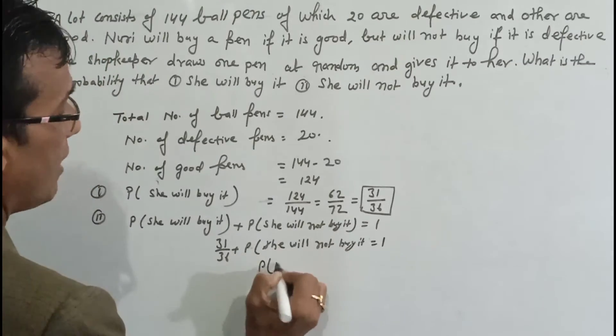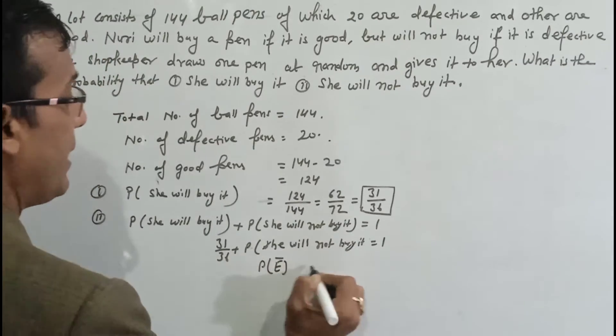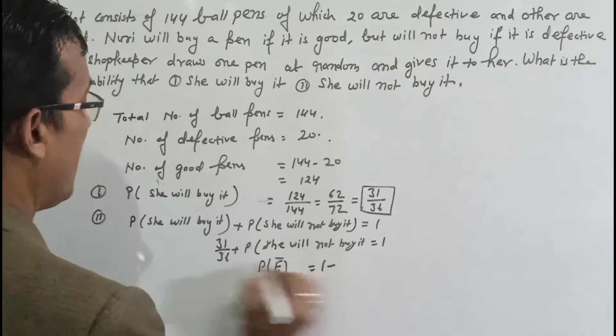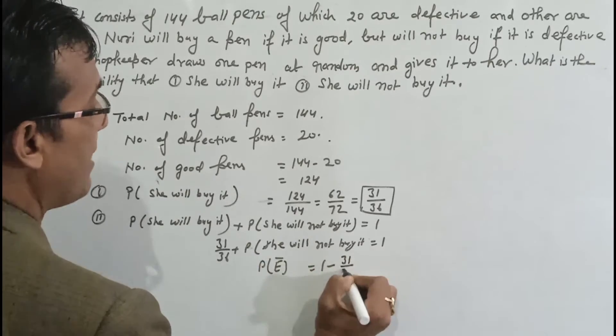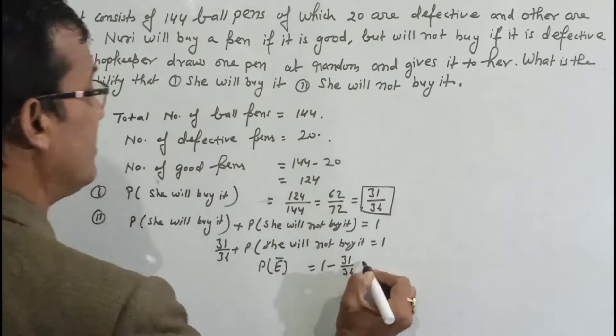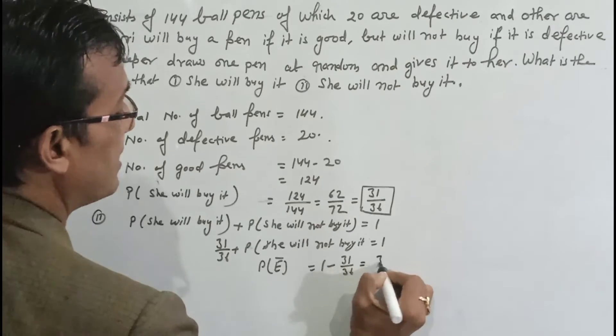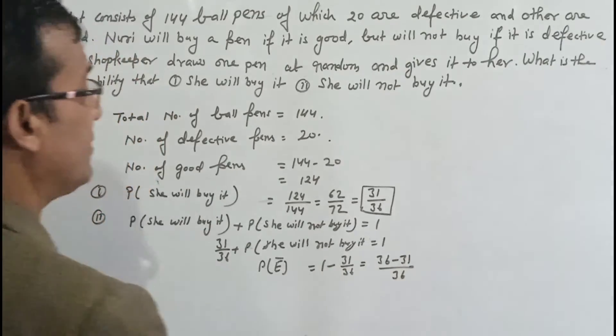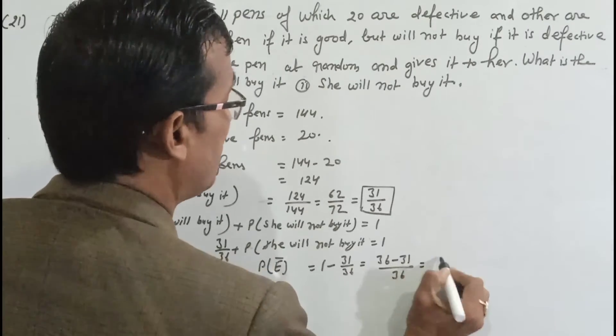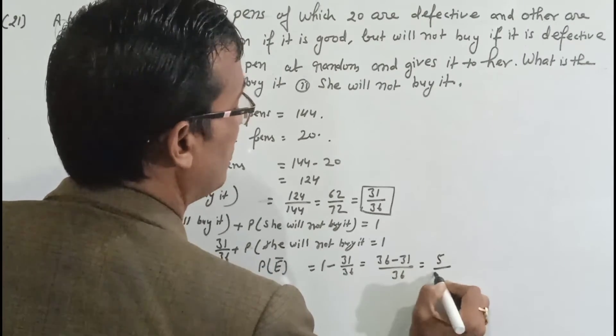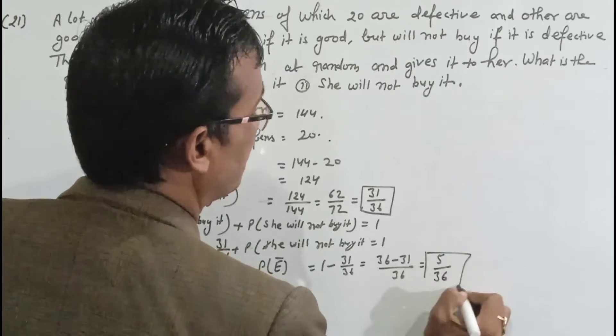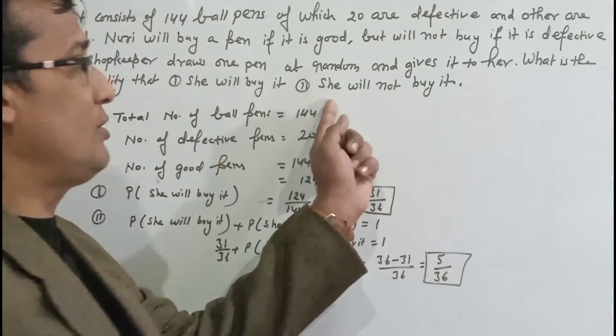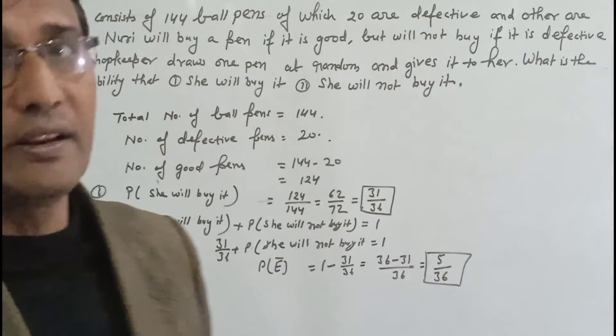Probability of not buying equals 1 minus 31 upon 36, which equals 36 minus 31 upon 36, equals 5 upon 36. Probability she will not buy it equals 5 upon 36.